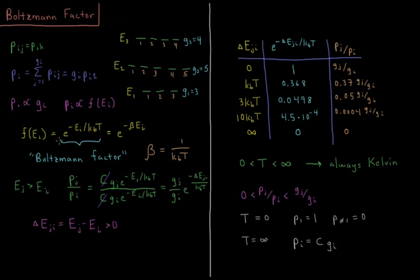The Boltzmann factor is e to the minus energy of that level divided by the Boltzmann constant times temperature. This is also equal to e to the minus beta times E_i, where beta, the inverse temperature, is defined as 1 over the Boltzmann constant times temperature. The temperature is always taken in Kelvin, and the Boltzmann constant has a value of approximately 1.381 × 10⁻²³ joules per Kelvin — it's the gas constant divided by Avogadro's number.